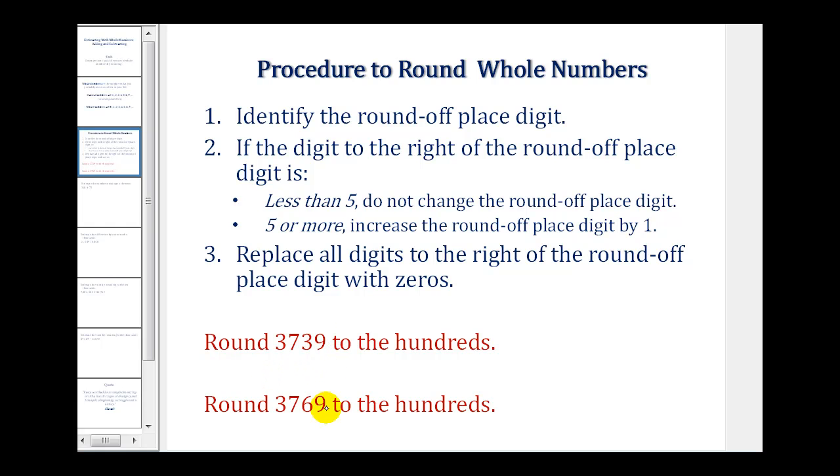For example, we want to round both of these numbers to the hundreds. So we'll first identify the hundreds place value, which is the seven for both numbers. The digit to the right is what I call the decision maker, which tells us whether we round up or round down.